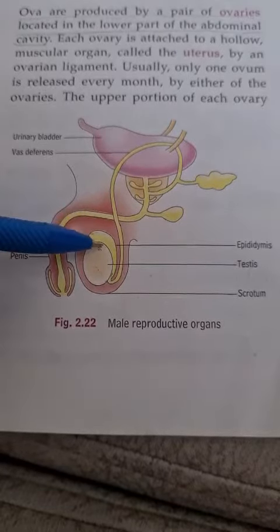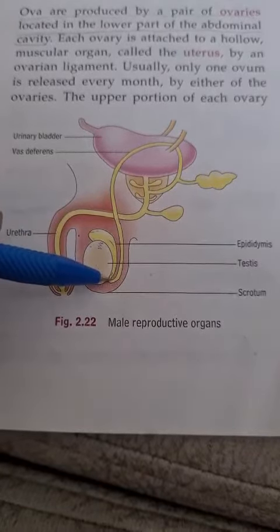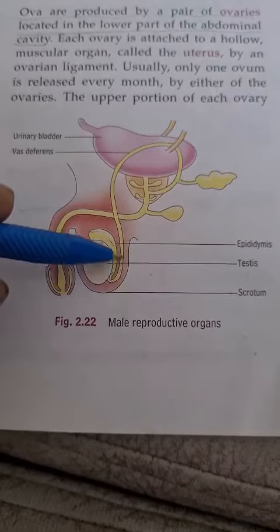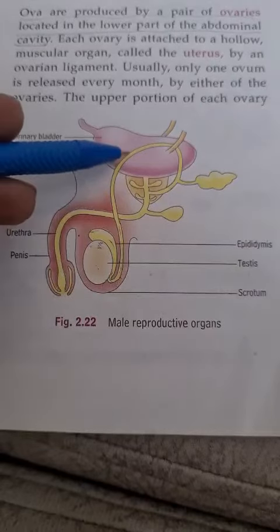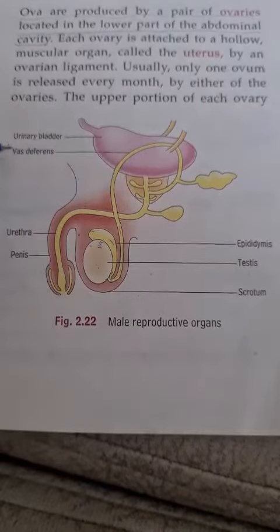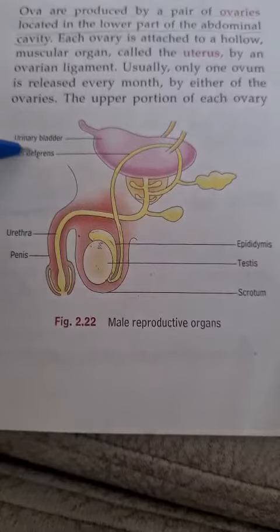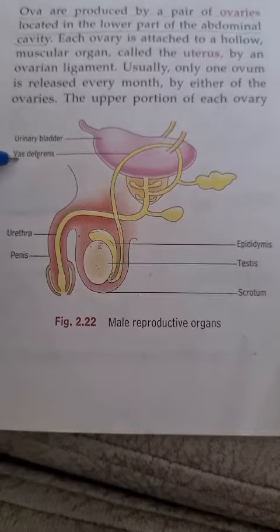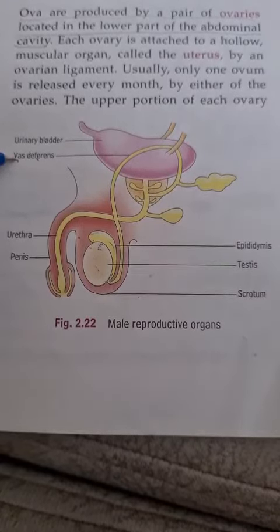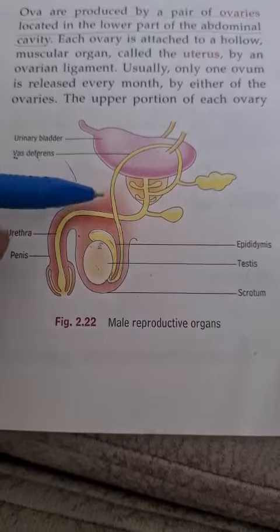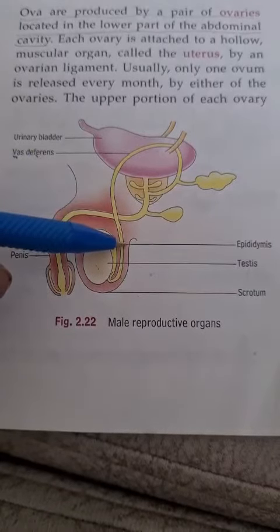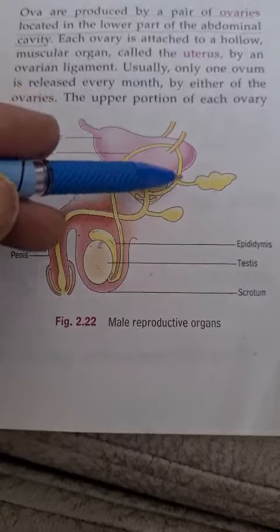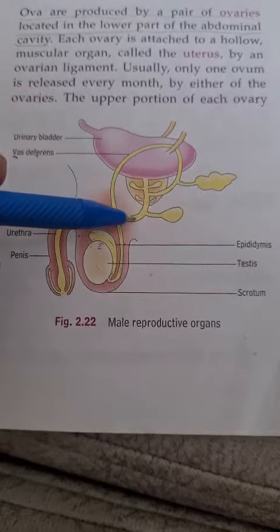After the epididymis, the mature sperms are passed to a long tube called the vas deferens. Another name for vas deferens is sperm duct. This sperm duct carries sperm inside the abdominal cavity towards the urethra.